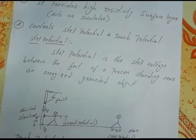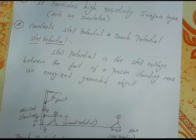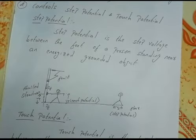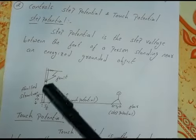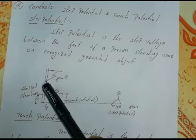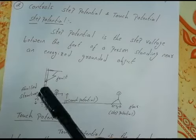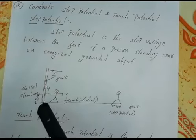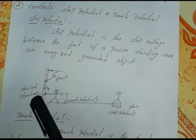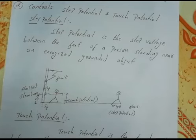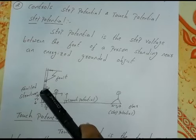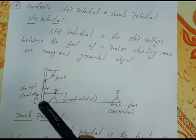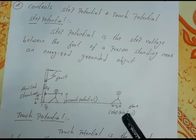Step potential is the step voltage between the feet of a person standing near an energized or grounded object. Here is an example to explain step and touch potential. Suppose there is a fault in the line and the current is traveling from the equipment through to the ground. When the person touches the equipment, there is a voltage difference between the hand and the ground — this is called touch potential.